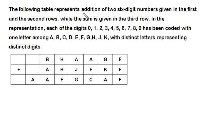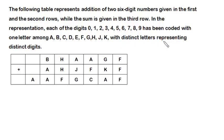The problem states that a table represents the addition of two six-digit numbers given in the first and second rows, while the sum is given in the third row. The first row and second row are six-digit numbers, and their addition gives a seven-digit number. Each digit from zero to nine has been coded with one letter among A to K, with distinct letters representing distinct digits.